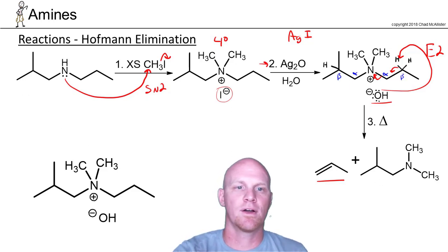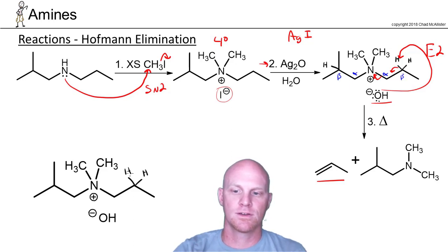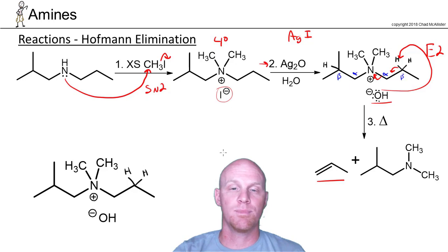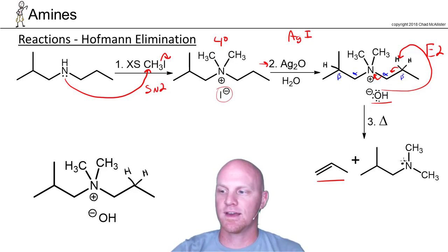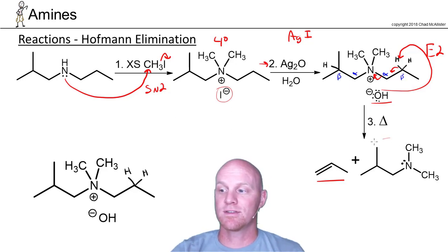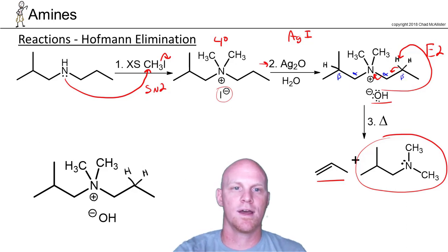One of the big things to worry about is why does this go Hoffman? Usually when we think of a good leaving group, we think of the halides — chlorine, bromine, iodine — because they're really, really weak bases. But if we look at our leaving group in this case, that is this amine, and amines are moderate to strong bases. So this species that acts as a leaving group is not a good leaving group. And when you don't have a good leaving group, elimination tends to go Hoffman.